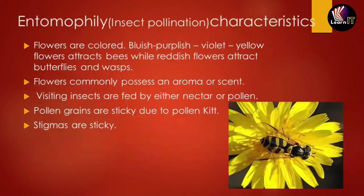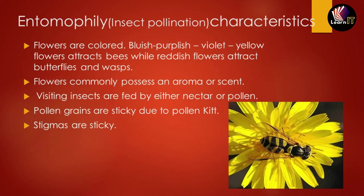The third type is entomophily, or insect pollination. The flowers are very colorful — bees are attracted to bluish, purplish, violet, and yellow colors, while butterflies and wasps are attracted to reddish flowers. Flowers commonly have aroma, scent, and nectar. Insects feed on the nectar or pollen. The pollen grains are very sticky due to pollen kits, so they stick to the stigmas of different flowers as insects move from flower to flower.